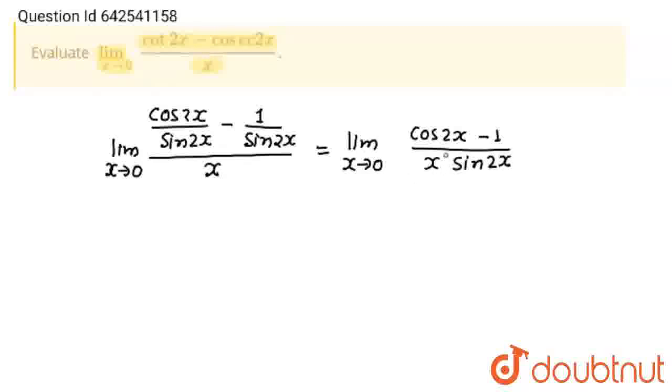Okay, now see, I am going to take minus sign, so this will be minus limit x tends to 0. So, this will be 1 minus cos 2x upon x into 1 upon sine 2x.